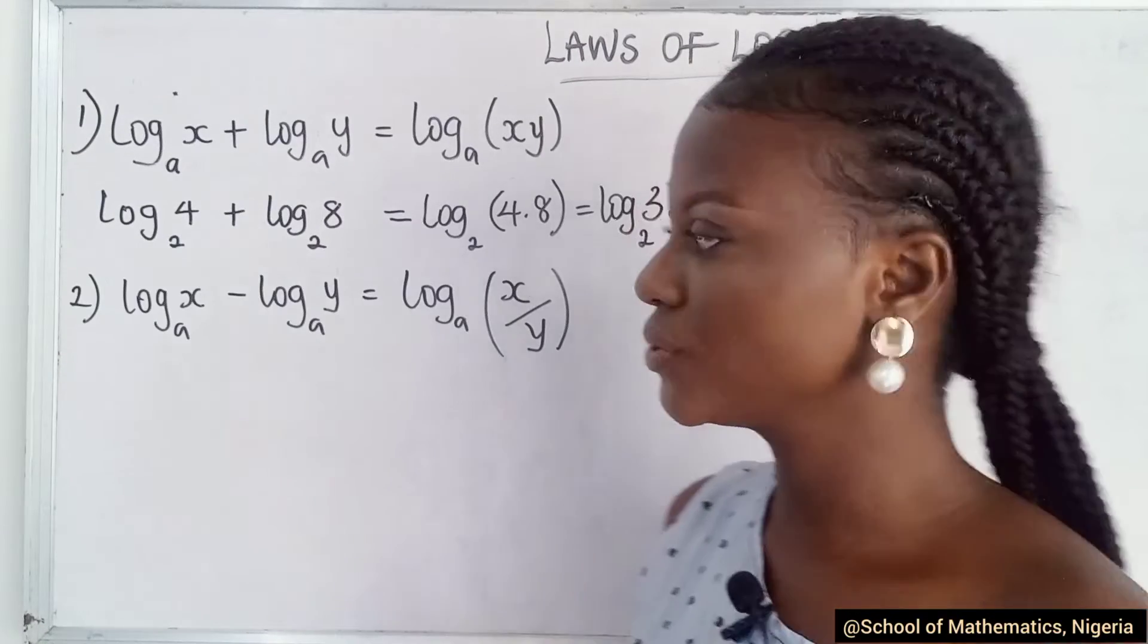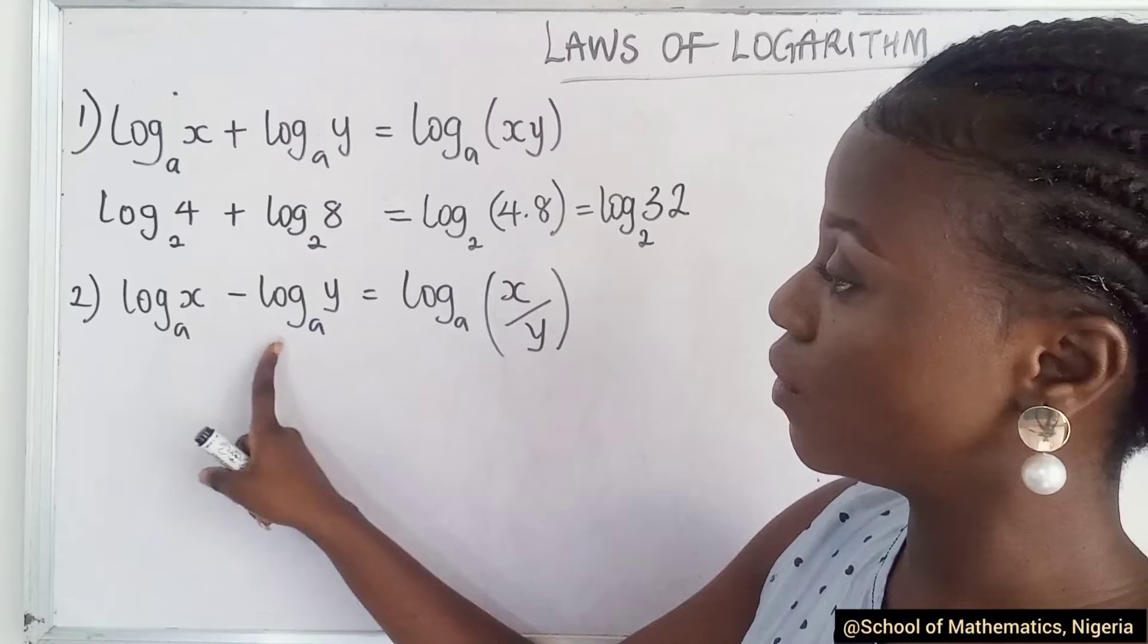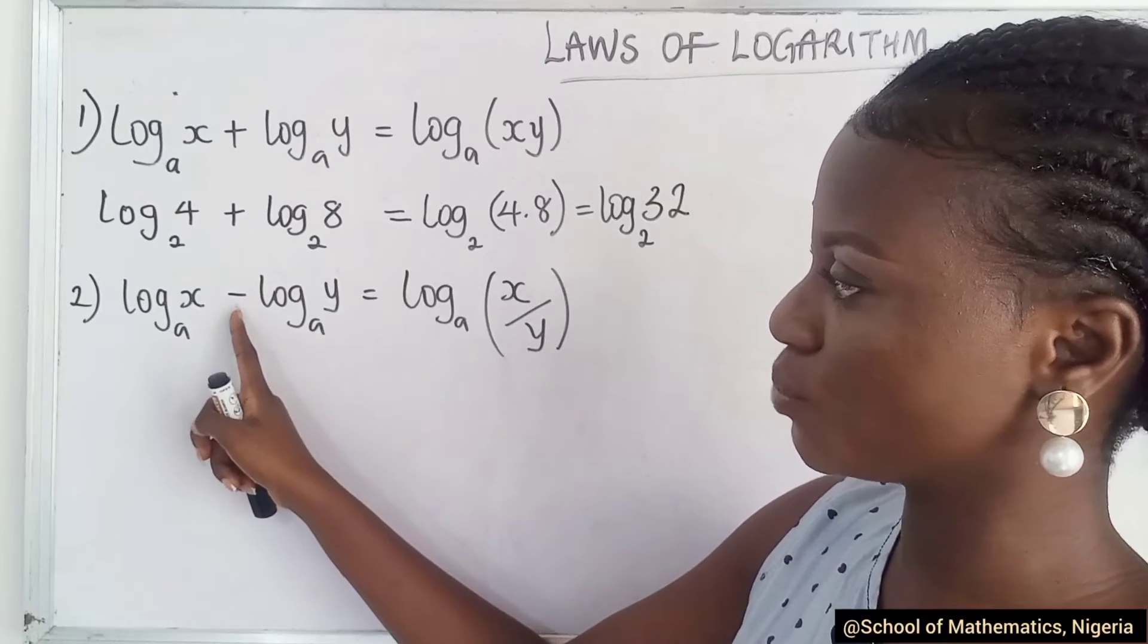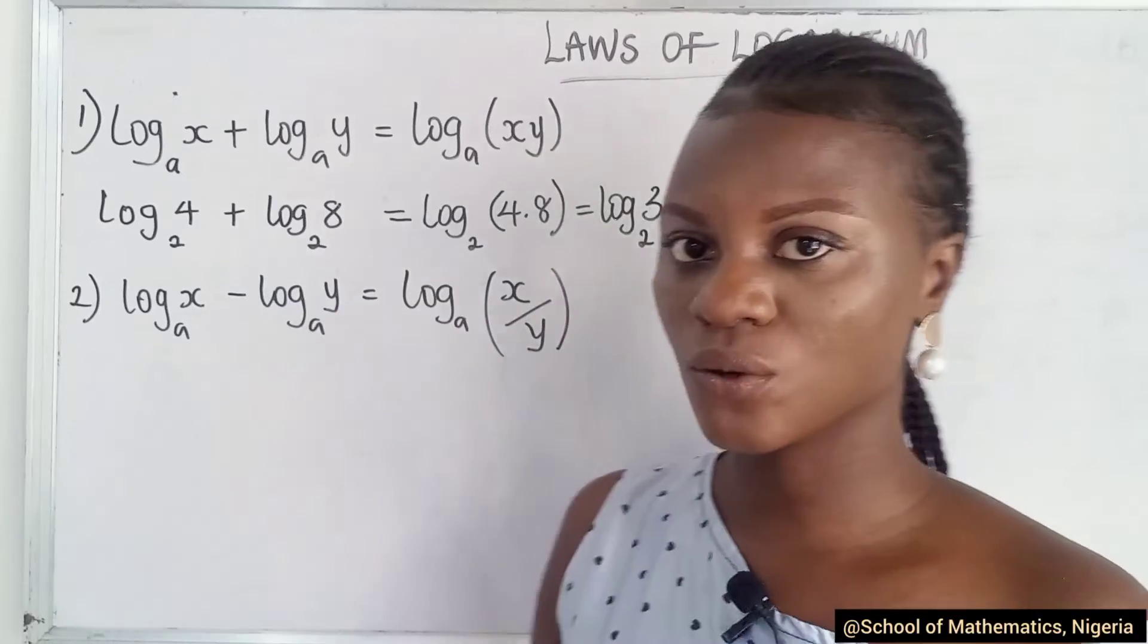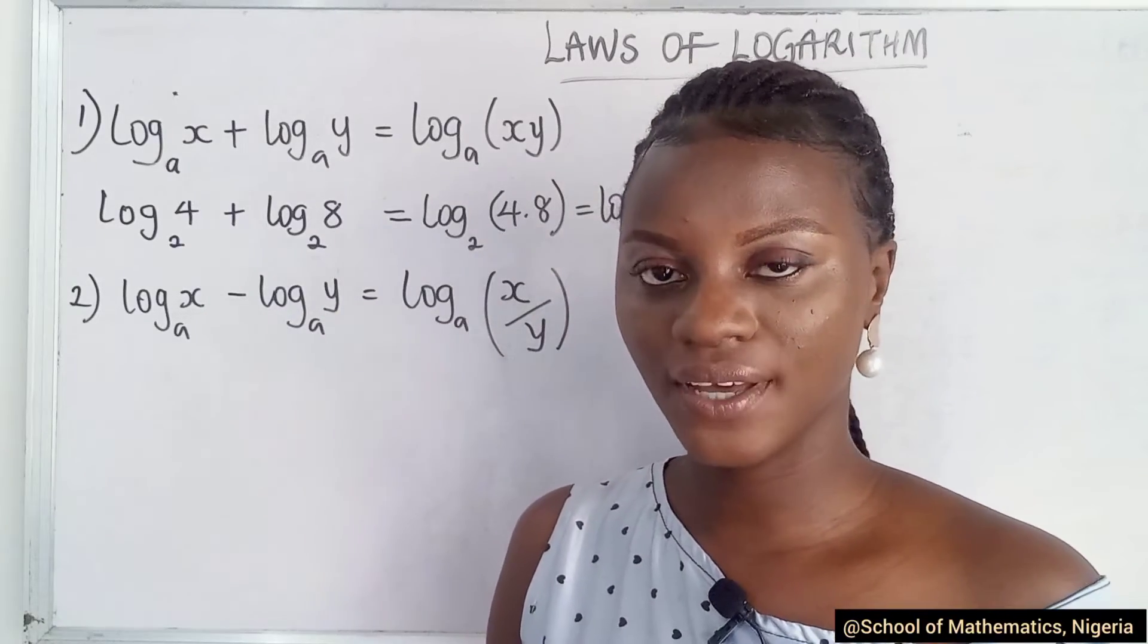Given the second rule, which says when you have log to same basis with a subtraction sign, what do you do? You divide the variable given. This is called the quotient rule.